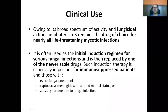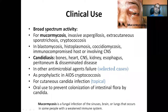Amphotericin B has a relatively broad spectrum of activity with fungicidal action in most cases. It remains the drug of choice for nearly all life-threatening infections. It is often used as an initial induction regimen for serious fungal infections and then replaced by newer azole drugs. It is used as induction therapy especially in immunocompromised patients with severe fungal pneumonia, cryptococcal meningitis with altered mental status, and sepsis syndrome due to fungal infection. It is also used for mucormycosis and invasive aspergillosis.